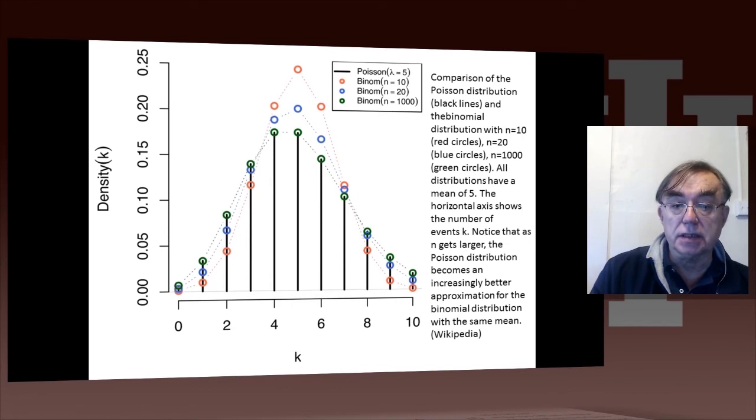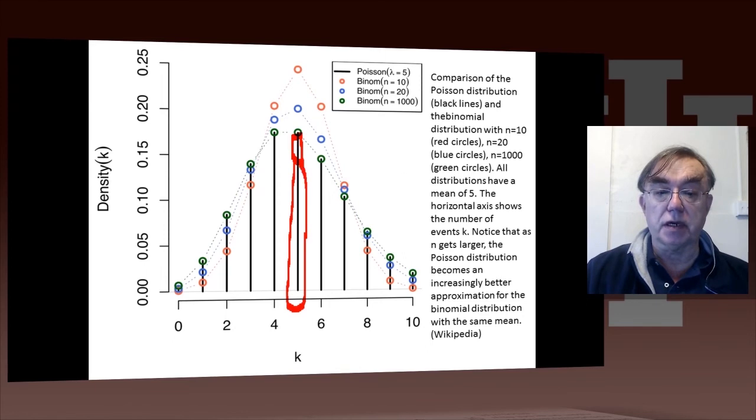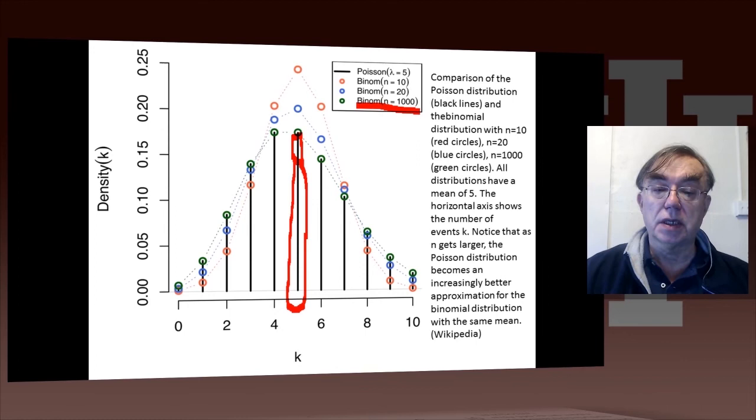This plot here compares Poisson, which are the black lines, with various binomial distributions. And when you do the things finely enough and chop the binomial up into many small steps, you will find the binomial looks very similar to the Poisson.